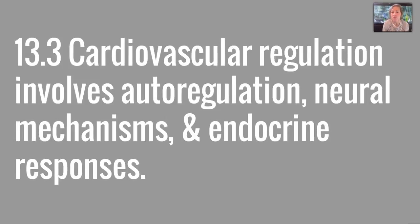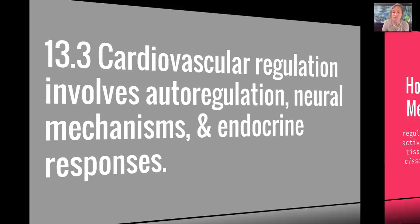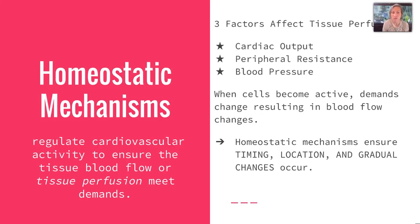Section 13.3 covers cardiovascular regulation with autoregulation, neural mechanisms, and endocrine responses. These are homeostatic mechanisms that regulate cardiovascular activity to ensure tissue blood flow or tissue perfusion is met. Three factors can affect this: cardiac output, peripheral resistance, and blood pressure. When cells become active, the demands for nutrients change — they increase with more activity and decrease with less. Homeostatic mechanisms ensure the timing, location, and gradual changes occur to make sure those demands are met.